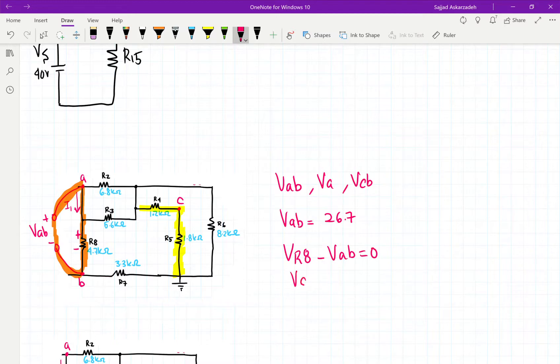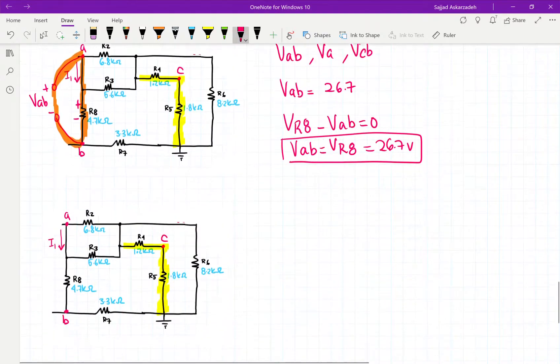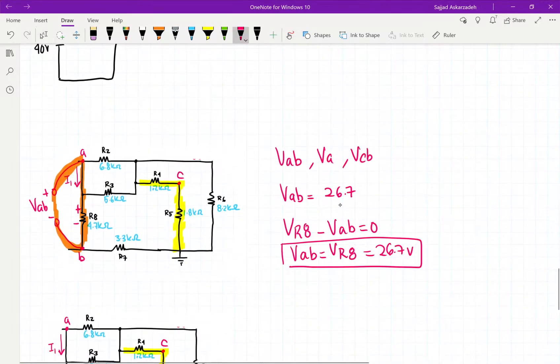But we know that VAB is equal to VR8. So therefore, VR8 is equal to 26.7, so then that gives us VAB. Okay, so that's with that. Now, so that's VAB.